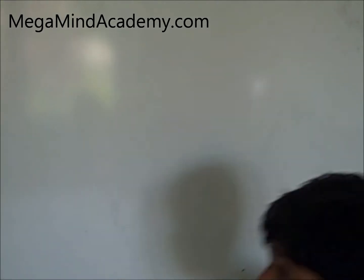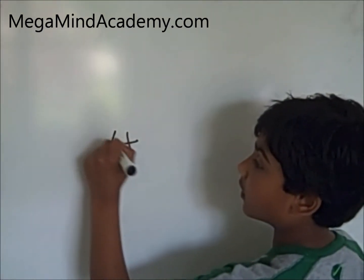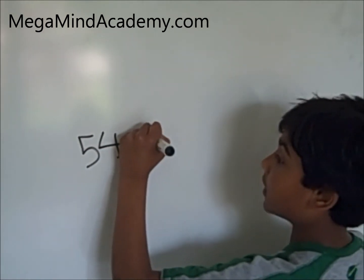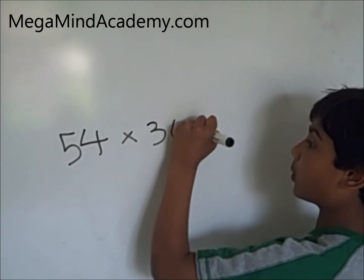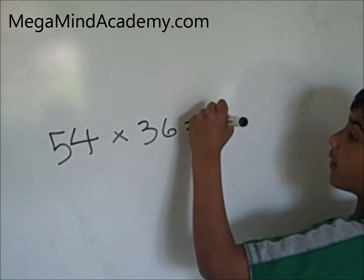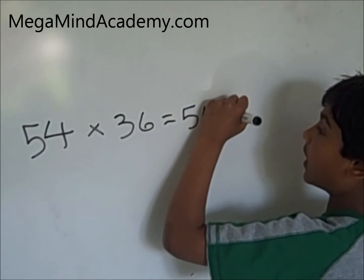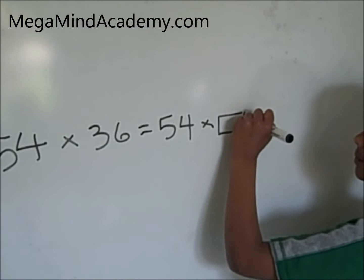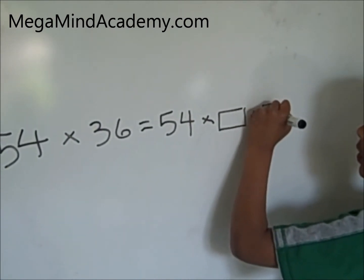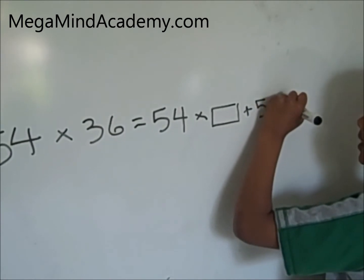Another equation could be 54 times 36 equals 54 times box plus 54 times 9.